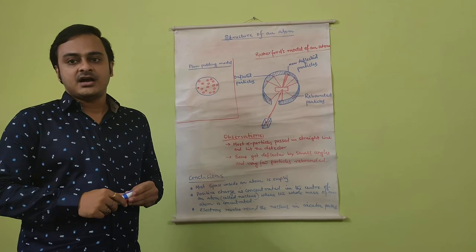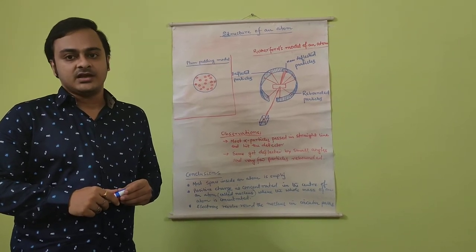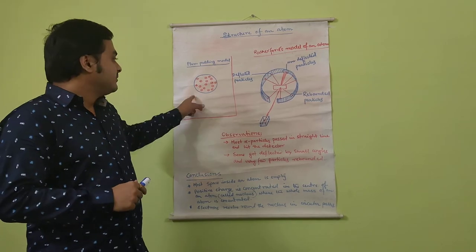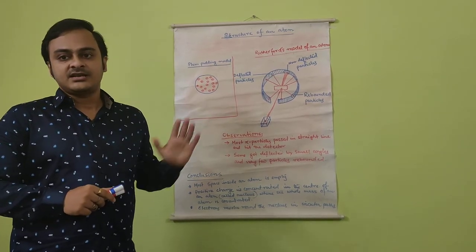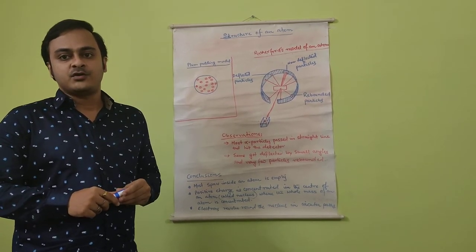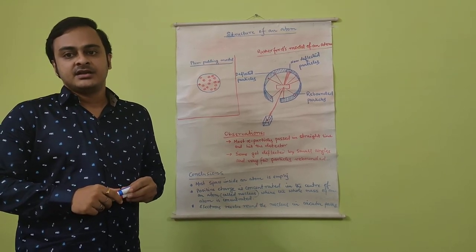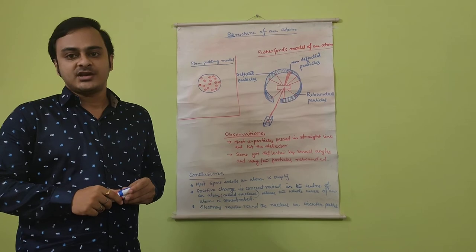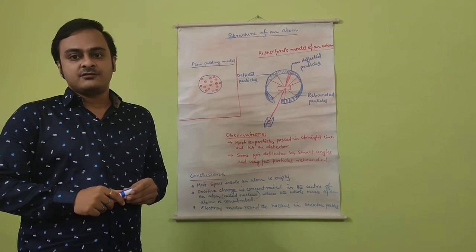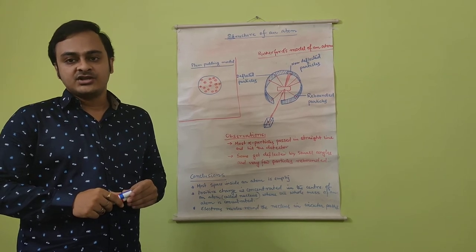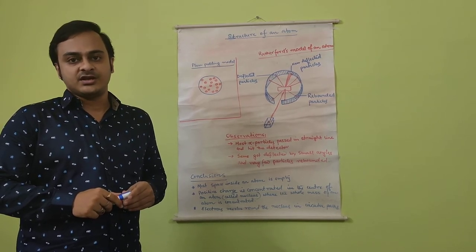Actually, the alpha particles have very high energy and are heavier as well. So if we say that the atom is a pudding of positively charged particles with electrons embedded in it, the particles will travel in straight lines through it. This is obvious because the heavier particles will pierce through the lighter pudding structure of the atom and pass through it.